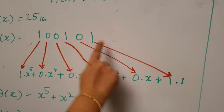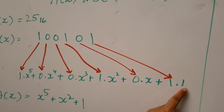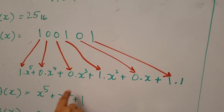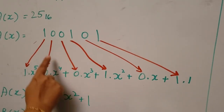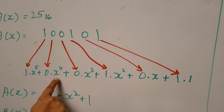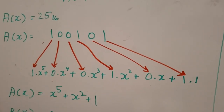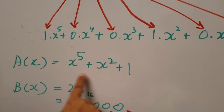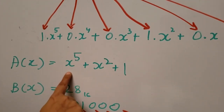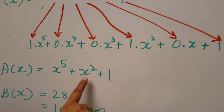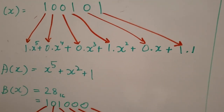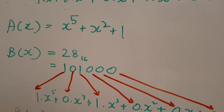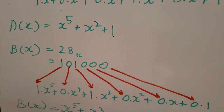...we get: 1 times 1, plus 0 times x, plus 1 times x squared, plus 0 times x cubed, plus 0 times x to the power 4, plus 1 times x to the power 5. So a(x) in polynomial form is x to the power 5 plus x squared plus 1.